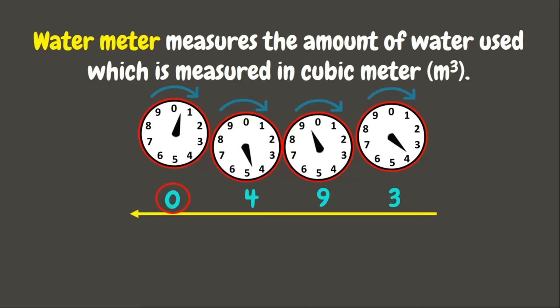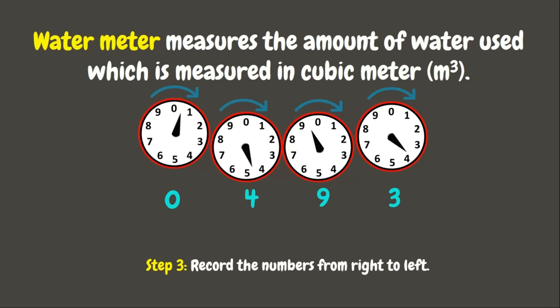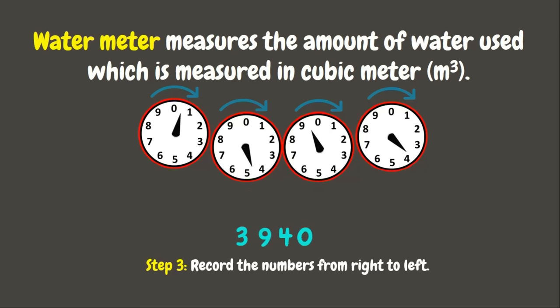Lastly, in dial A the pointer points between 0 and 1, so we record the smaller number which is 0. Unlike the electric meter where we record numbers as is, in the water meter we record from right to left — so the rightmost digit 3 is first, then 9, 4, and 0. Therefore the reading is 3,940 cubic meters.